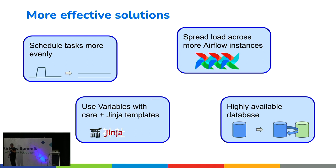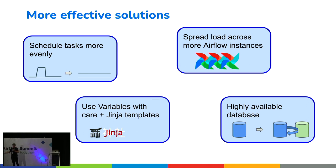More effective solutions: run task schedules more evenly — deferability does this naturally, but you can also adjust your schedule manually. Don't expect to run 10,000 tasks all at once at midnight; that will DDoS your solution. Spread loads across multiple instances — a great solution for the same reason. Use Jinja templates for variables, and use highly available databases. That's the summary of database-related solutions.